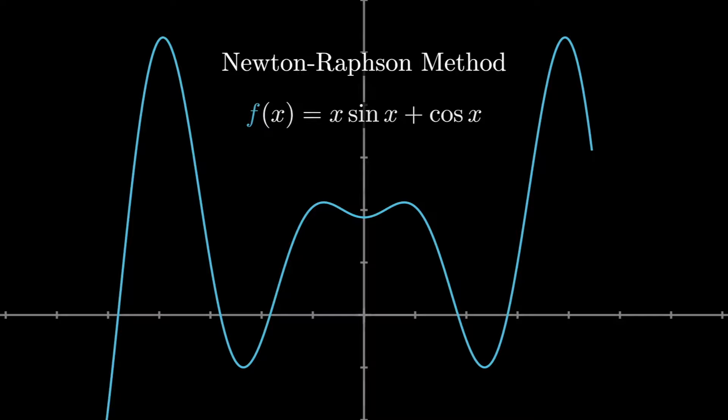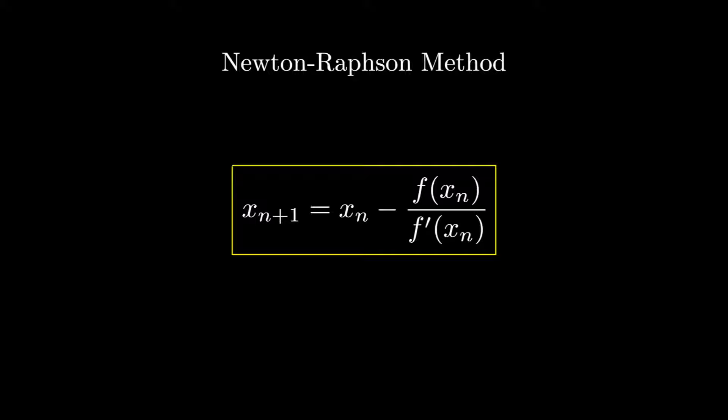For example, x sin x plus cos x equal to 0. The formula is x_{n+1} is equal to x_n minus f(x_n) over f'(x_n).